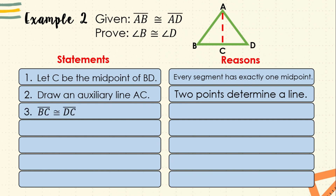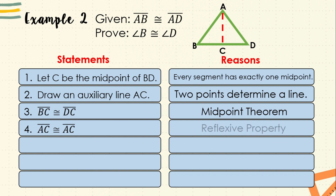Number three: based on our first statement that C is the midpoint of BD, we can say that segment BC is congruent to segment DC, by the midpoint theorem. Number four: on the auxiliary line AC, we can tell that AC is congruent to AC, because of the reflexive property. Number five: AB is congruent to AD — this is a given statement, since the given triangle is isosceles.